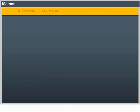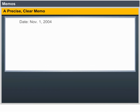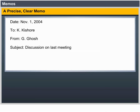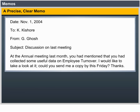A precise, clear memo example — Date: November 1st, 2004. To: K. Kisho. From: G. Ghosh. Subject: Discussion on last meeting. At the annual meeting last month, you had mentioned that you had collected some useful data on employee turnover. I would like to take a look at it. Could you send me a copy by this Friday? Thanks.